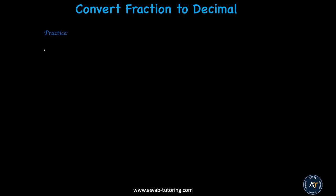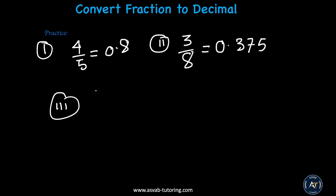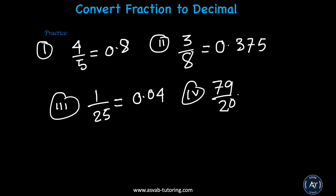Let's do some practice problems you can try by yourself. I'm going to write four different problems. Number 1: 4 over 5 — the answer is 0.8. Number 2: 3 over 8 — the answer is 0.375. Number 3: 1 over 25 — the answer is 0.04. The last one: 79 over 20 — the answer is 3.95. Make sure you understand. If you don't, look at the examples again and try.